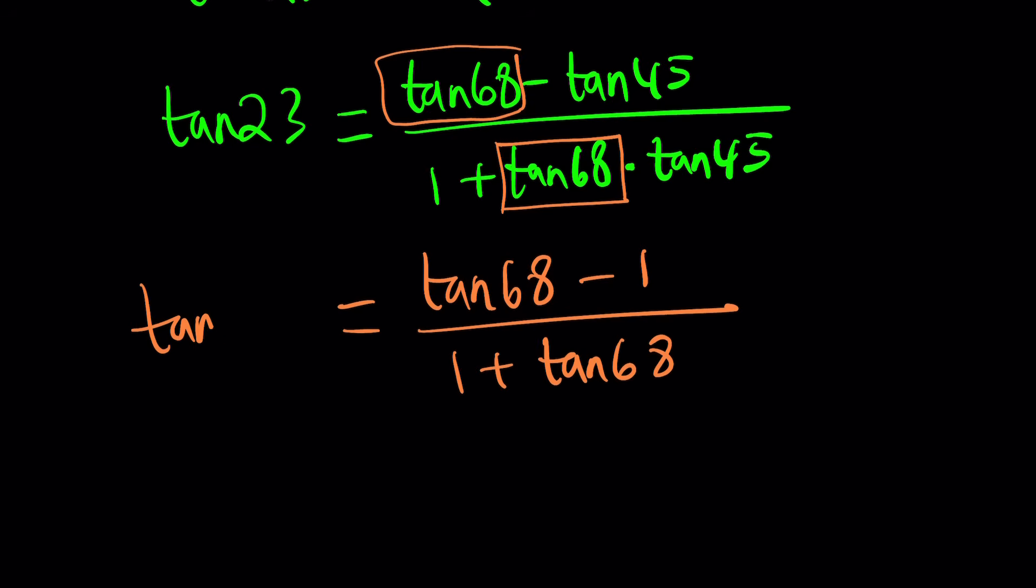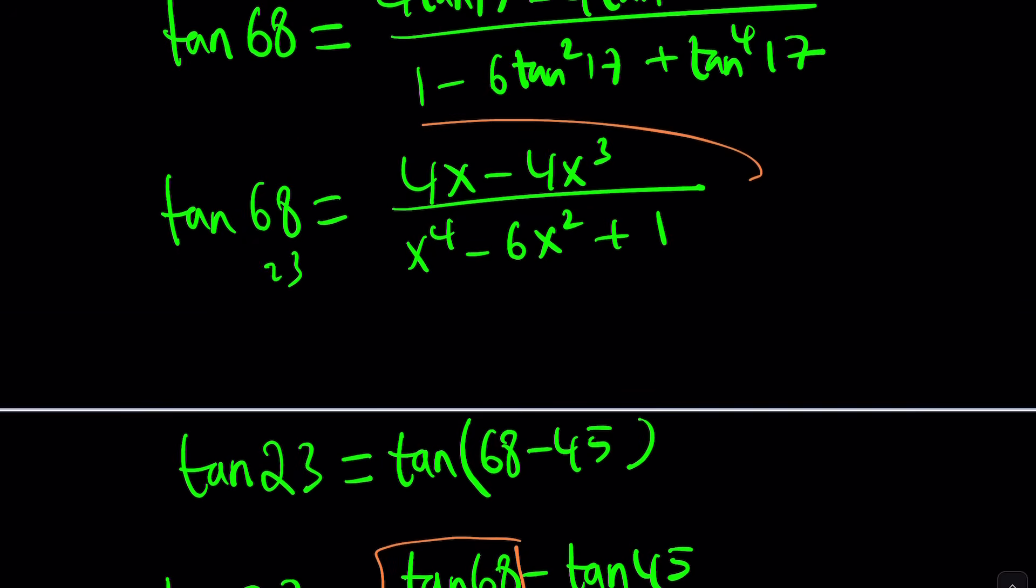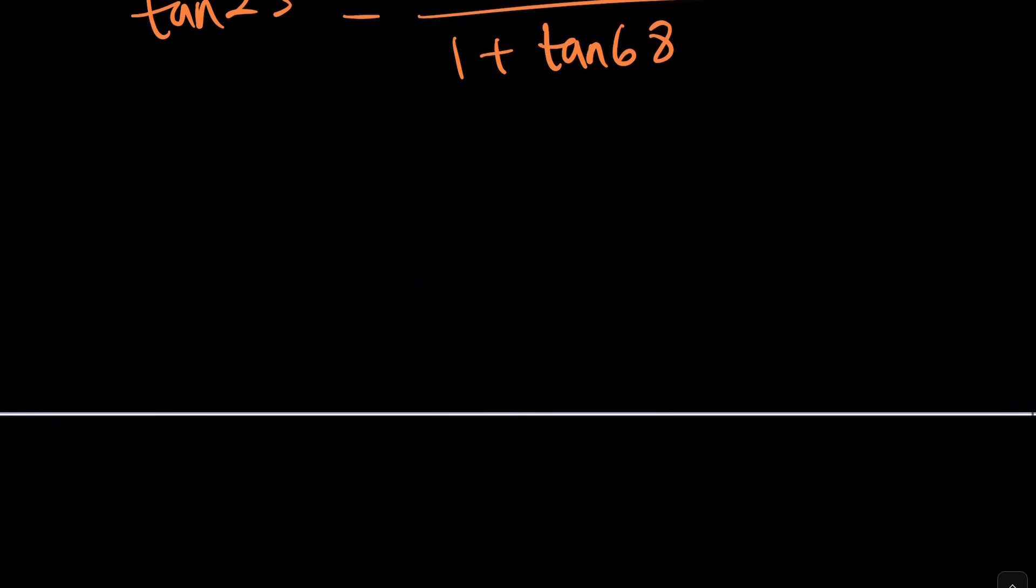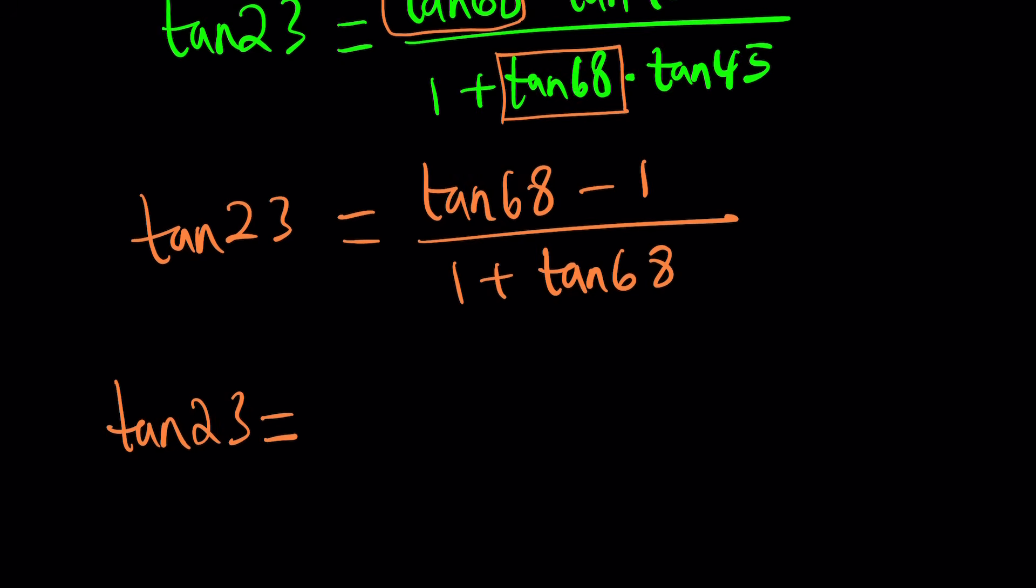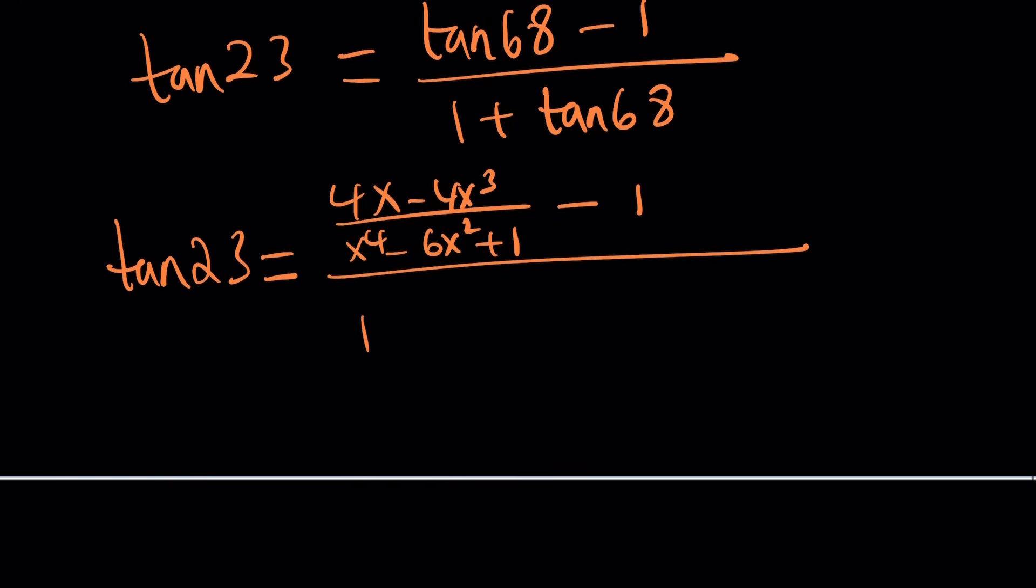But, I need to replace tangent 68 with what it is. And, that's kind of complicated. Sorry about that. But, here's what we can do first. Tangent 45 is 1, so let's just go ahead and do that first, because that'll simplify our expression quite a bit. So, this is tangent 23 in terms of tangent 68. And, you have an expression for tangent 68, which is this guy right here. Let's go ahead and plug it in. So, now we can get the answer tangent 23 equals tangent 68, which is 4x minus 4x cubed divided by x to the fourth minus 6x squared plus 1. All of that is divided by 1 plus the same thing.